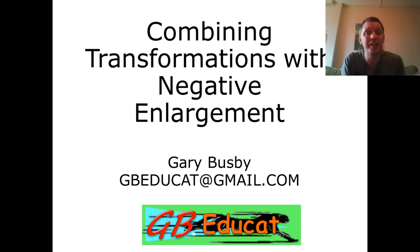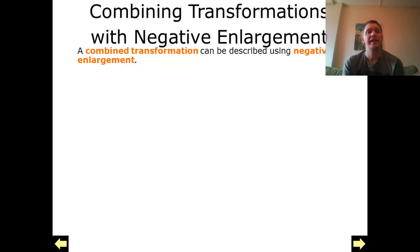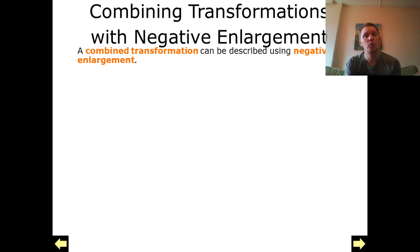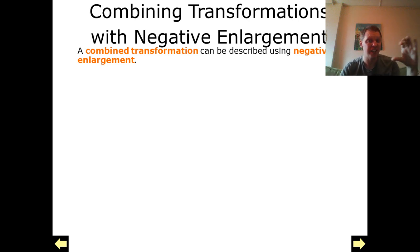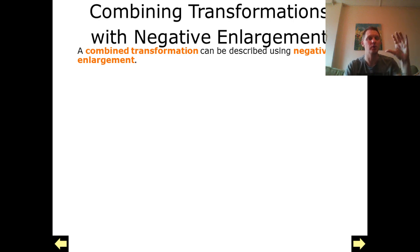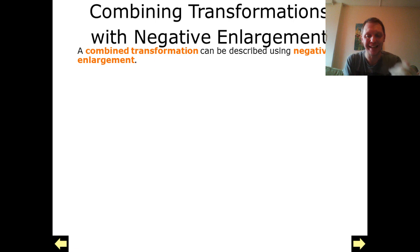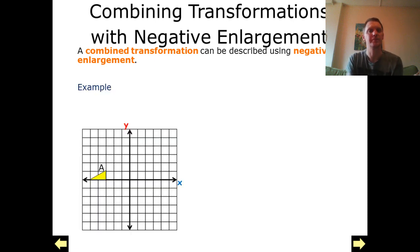Hi and welcome to today's session on combining transformations with negative enlargements. What I'm going to be doing is performing multiple transformations, which we're then going to describe — from the one we started with to the one we finished with — and describe that the mapping has one transformation. In this case, we're going to be using negative enlargement to describe this.